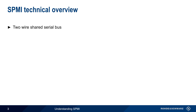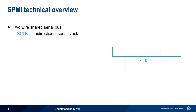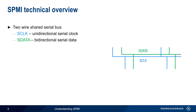SPMI is a shared, two-wire serial bus — one wire being the unidirectional serial clock, and the other wire being bidirectional serial data. Note that the use of a shared bus reduces the number of required lines, or pins, in multi-device systems.